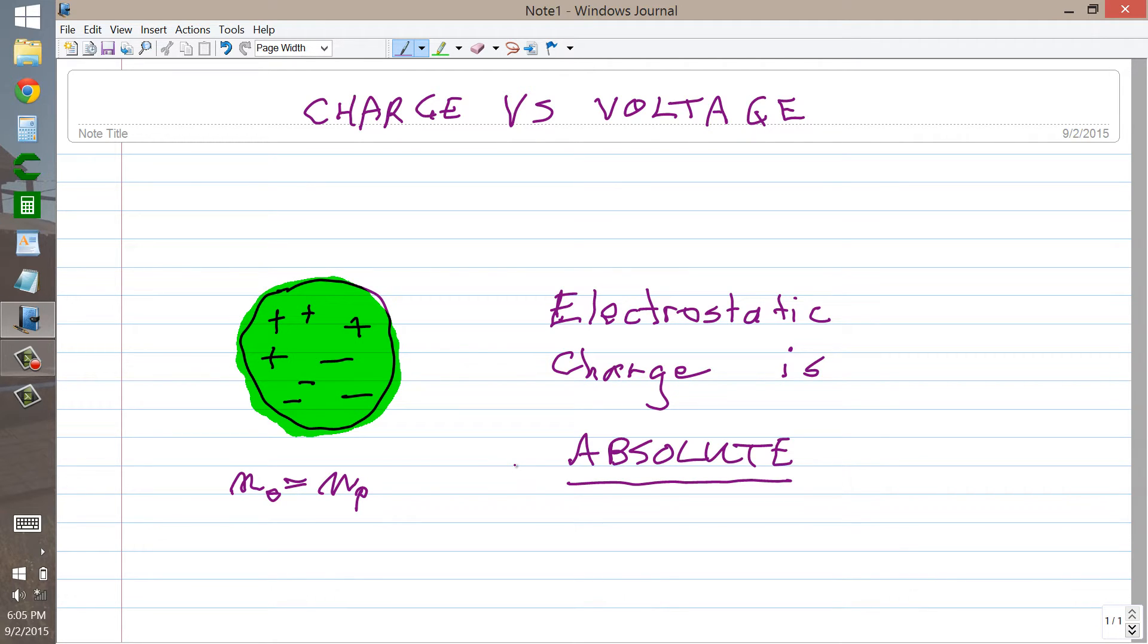N sub e equals n sub p. The number of electrons equals the number of protons. So the actual absolute electrostatic charge on this object, call it q, is zero. That thing is electrostatically neutral and there's no getting around it. Its electrostatic charge is zero.